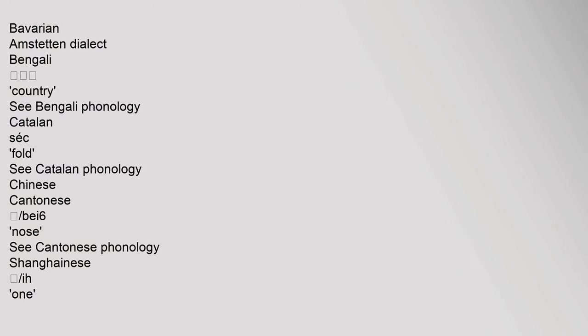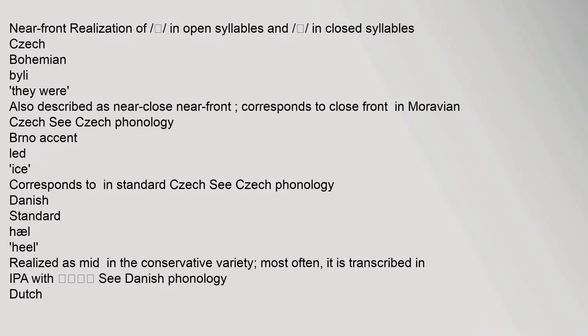Bavarian-Amstetten dialect. Bengali: see Bengali phonology. Catalan: see Catalan phonology. Chinese Cantonese: see Cantonese phonology. Shanghainese: near front realization in open syllables and in closed syllables. Czech Bohemian: also described as near close near front; corresponds to close front in Moravian Czech — see Czech phonology. Brno accent: corresponds to in standard Czech — see Czech phonology. Danish standard: realized as mid in the conservative variety; most often transcribed in IPA — see Danish phonology.